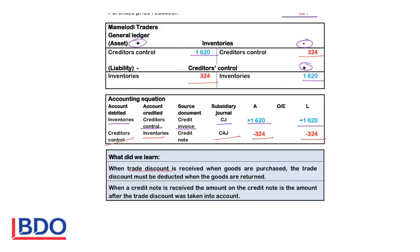So what did we learn? When trade discount is received and goods are purchased, the trade discount must be deducted and you will not record the trade discount. You will record the amount calculated after the trade discount was deducted, because that is the amount you owe to the creditors and that is your actual purchase price. When a credit note is received, it will show the amount after the trade discount was taken into account. They can either tell you the goods were returned before the trade discount was taken into account — then you deduct the trade discount — or they give an amount on the credit note, which will already be after the trade discount.